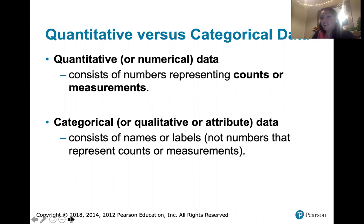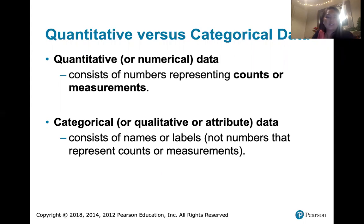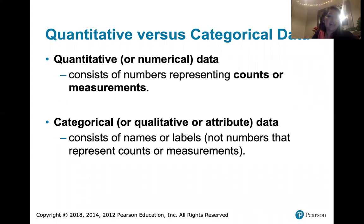So if we talk about hair color or eye color, or if we talk about names of classes or states, all of that is categorical data. Quantitative data would be the number of shoes in your closet, measurements, like a number of points that you've earned in a class. That's quantitative data.